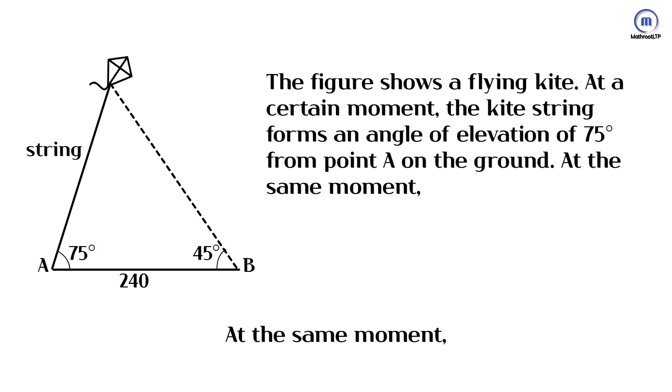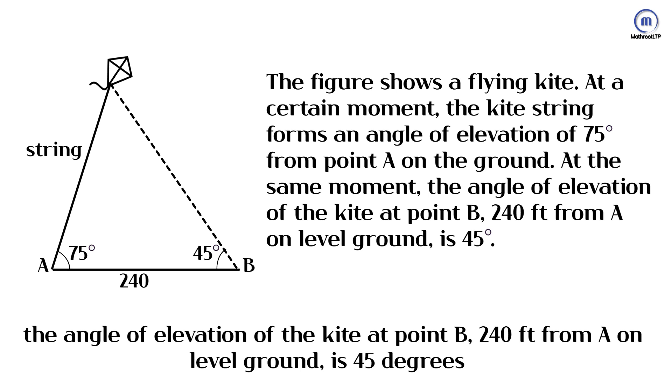At the same moment, the angle of elevation of the kite at point B, 240 feet from A on level ground, is 45 degrees.